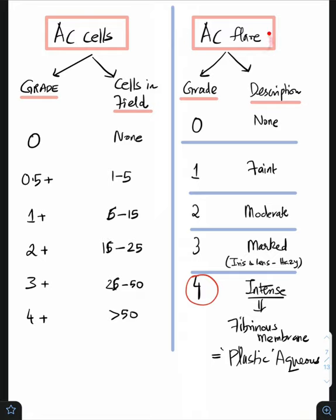Now let us move on to AC flare. AC flare is going to be again from 0 to 4, it's easier than AC cells. 0 means no flare, 1 means faint flare.